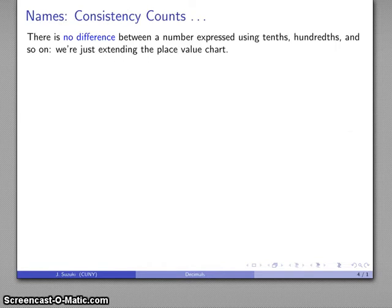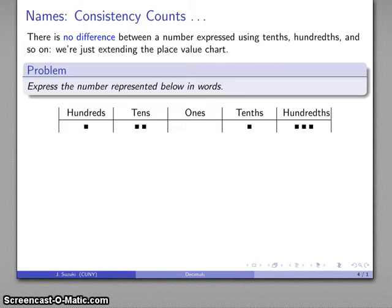Now, let's talk about naming these numbers. Consistency counts. There is really no difference whatsoever between expressing a number using 10s, 100s, and so on. We're just extending our place value chart.